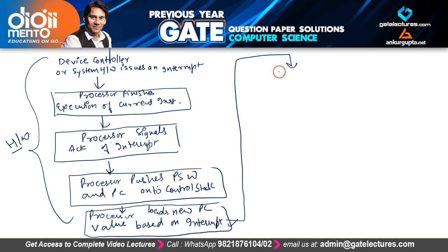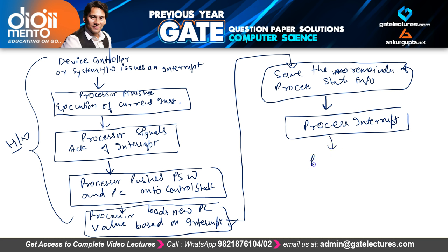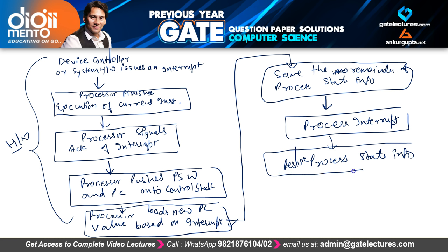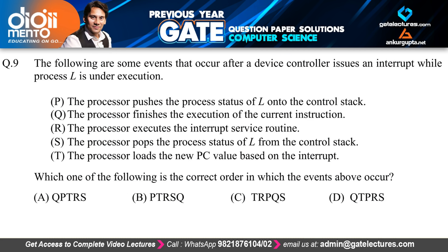After the hardware steps, the software-based steps follow: we save the remainder of process state information, then the interrupt service routine processes the interrupt, then we restore the process state information, and finally we restore the old program status word and program counter value.